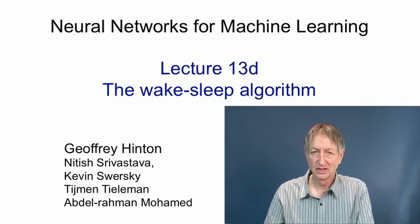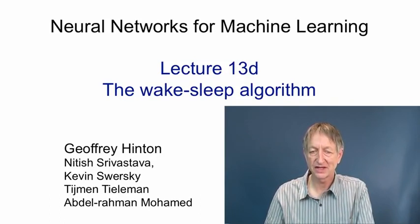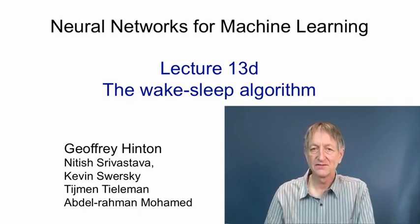In this video, I'll describe the first way we discovered for getting sigmoid belief nets to learn efficiently. It's called the wake-sleep algorithm, and it should not be confused with Boltzmann machines. They have two phases, a positive and a negative phase, that could plausibly be related to wake and sleep. But the wake-sleep algorithm is a very different kind of learning, mainly because it's for directed graphical models, like sigmoid belief nets, rather than for undirected graphical models, like Boltzmann machines.